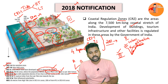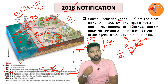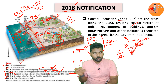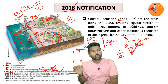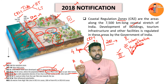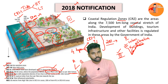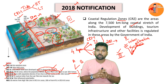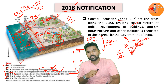Coming to CRZ4, this covers all oceanic water bodies — the territorial waters plus water bodies where tidal wave action occurs. In CRZ4, no new construction will be allowed. However, the traditional method of fishing will be permitted.